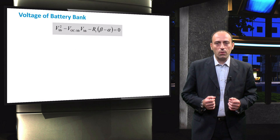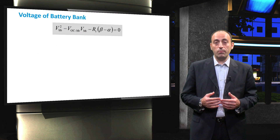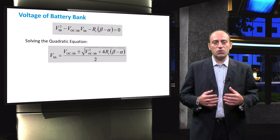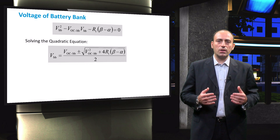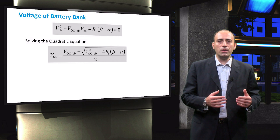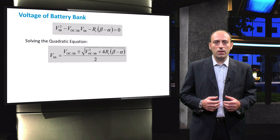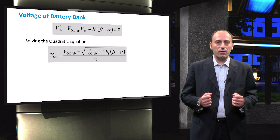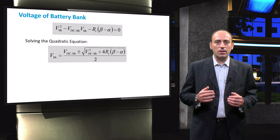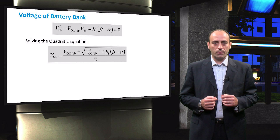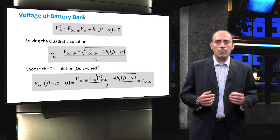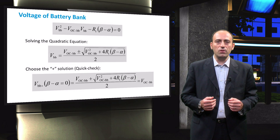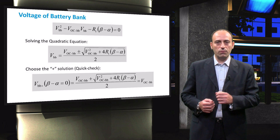This quadratic equation should be solved for the variable VBB. Two solutions can be obtained after solving it. Out of these two solutions, the correct one is the one using the positive sign. This is verified by assuming a situation where there is no power flow in the PV system, that is when the circuit is open. This means the beta minus alpha term in the solution will be equal to zero and the voltage of the battery will be equal to its open-circuit voltage.